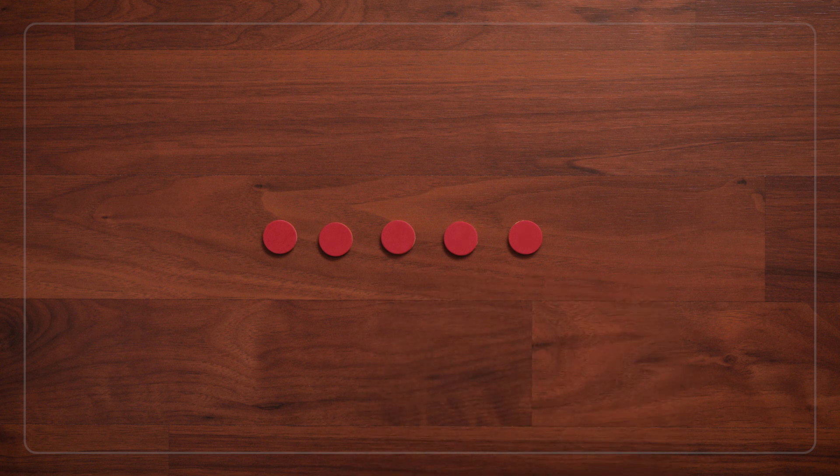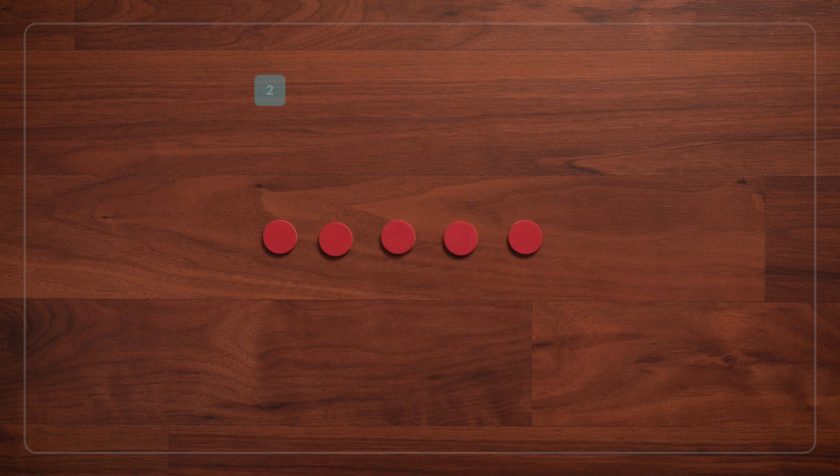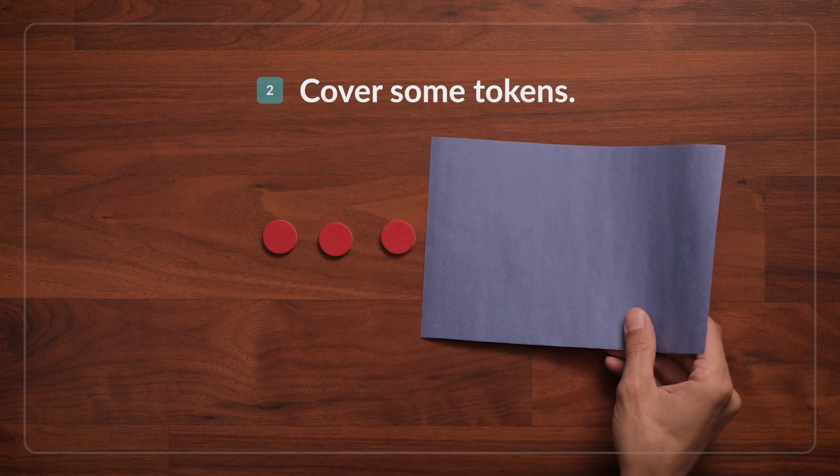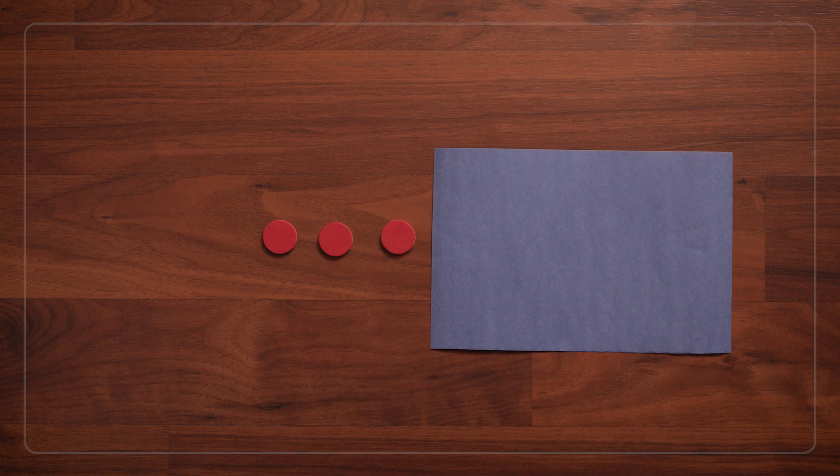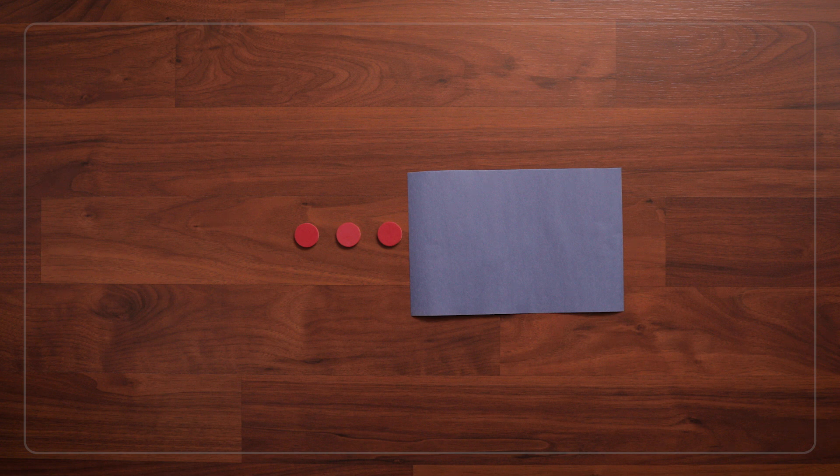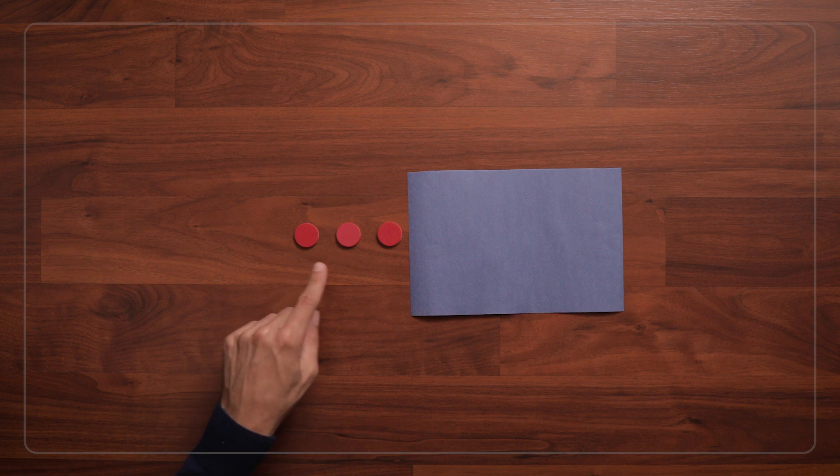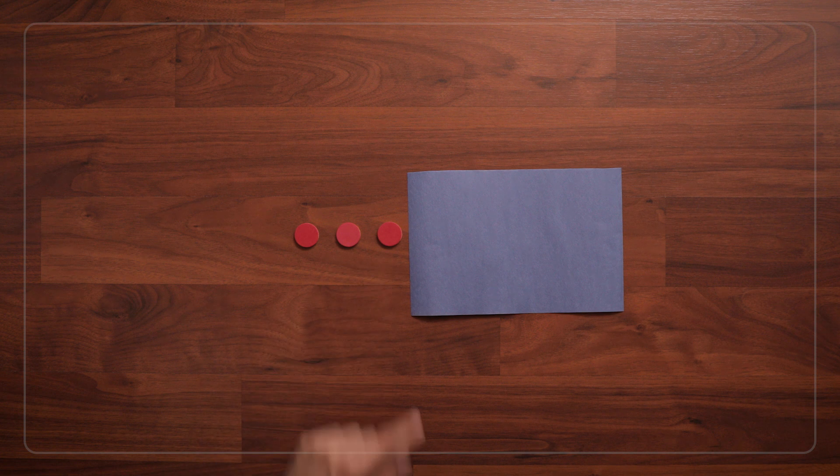All right, then ask children to close their eyes and either with your hand or with a cloth or a piece of paper, hide some of the tokens. Then say, 'Open your eyes. How many do you see?' One, two, three. Three tokens.